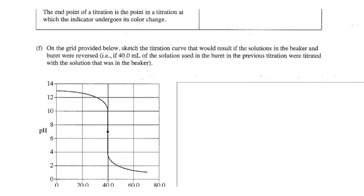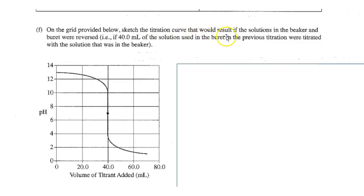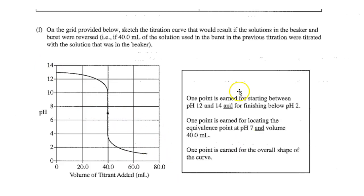On the grid below, sketch the titration curve that would result if the solution in the beaker and burette were reversed. It looks like I actually already answered it. We're reversed, and that would be the answer, I think. Yeah, it would go from 12 down to there, and that's the answer. Let's see if that's what it says. One point for starting between 12, you just flip it around. It's just like reverse it. No big deal.